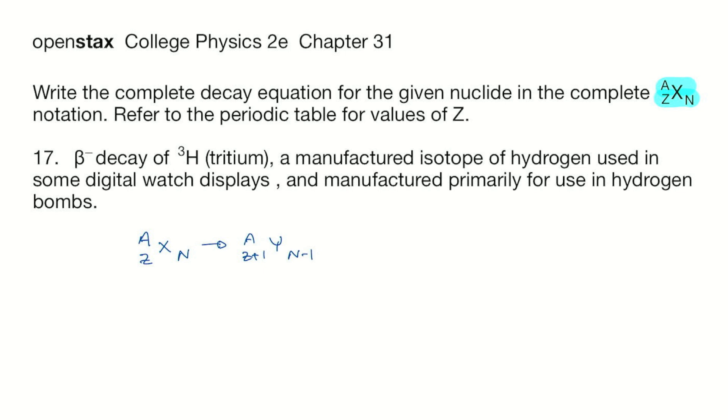Then we add a beta minus particle plus an anti neutrino. The beta minus particle is an electron, and the anti neutrino is a particle with a tiny infinitesimal amount of mass and no charge.